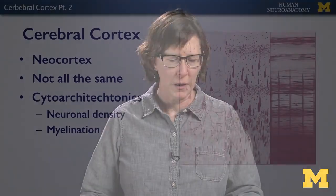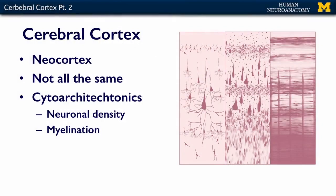The neocortex isn't all the same everywhere. In certain regions, and you can see from the artist's drawing, you have different cell types and different layers, and it looks different depending on what kind of stain you use to visualize the cells.